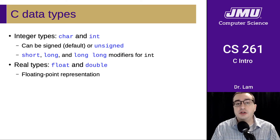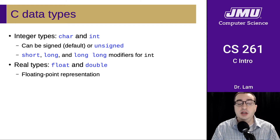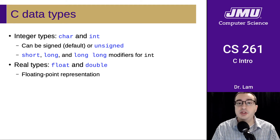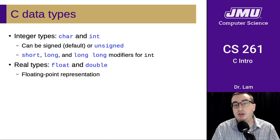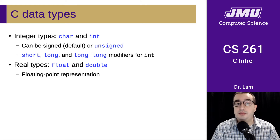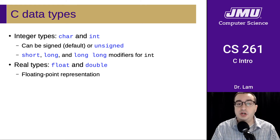There are a bunch of data types built in to C. There are integer types like char and int, which can be signed or unsigned — we'll talk more in a couple of weeks about the differences between those two. There are also some modifiers you can use, so you can have a short int, a long int, or a long long int, and that refers to the amount of space reserved for that integer. There are also real types that use a floating point representation: float and double, which are named the same as in Java.